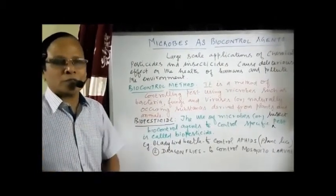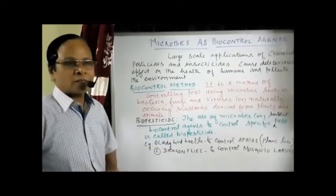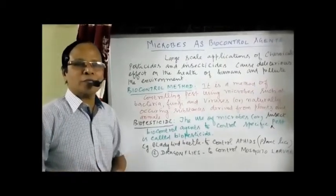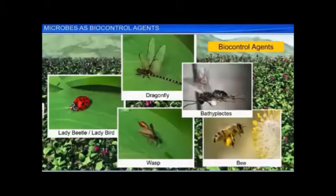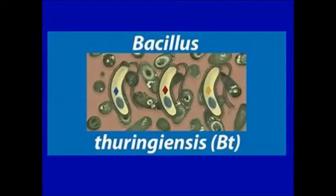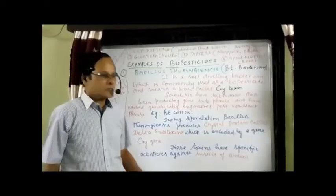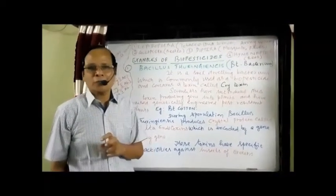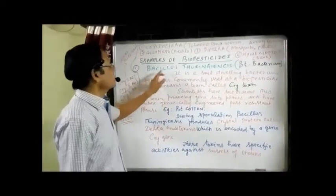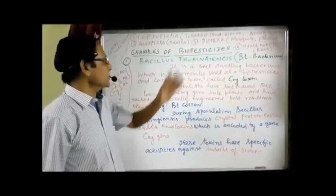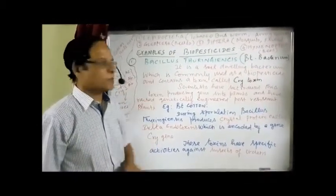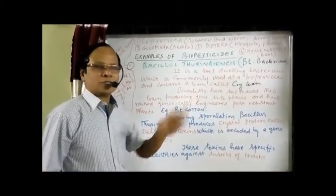We have to look at more examples related to biopesticides — some fungus, some viruses, and the bacterium called the Bt bacterium. Number one: Bacillus thuringiensis, the common bacterium used as the best biopesticide, commonly called the Bt bacterium. It is a soil-dwelling, free-living bacterium — not a parasite — which is commonly used as a biopesticide.